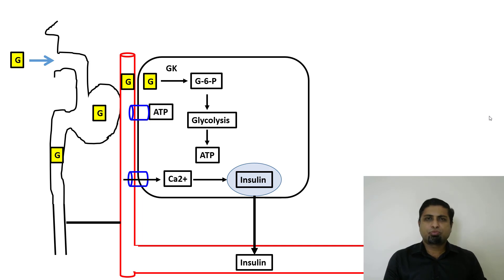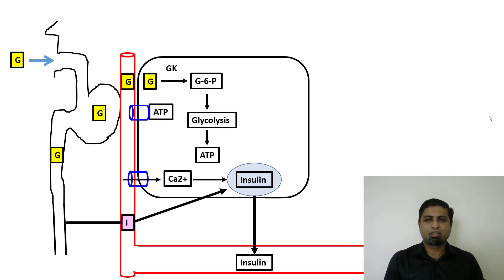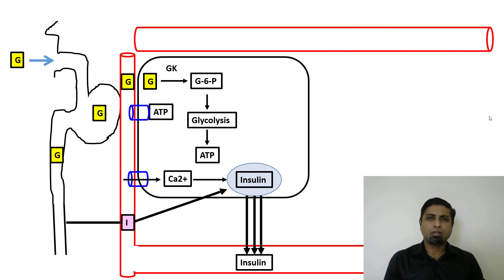In response to an oral glucose load, endocrine cells in the small intestine release certain hormones called incretins. These incretins can also stimulate the release of preformed insulin from the beta cells of the pancreas into the blood. So now we have a situation where the plasma is rich in not only glucose but also insulin.